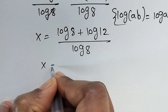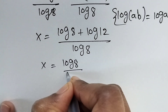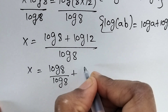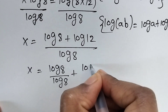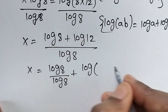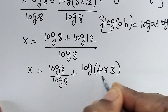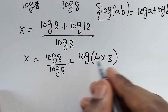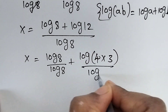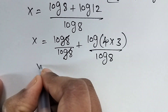So now subtract these two terms. Then it will be log 8 divided by log 8 — that gets cancelled — plus log 12 divided by log 8. So we can write log 12 as log 4 times 3, since 4 times 3 equals 12, divided by log 8.